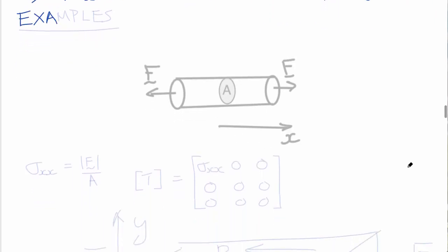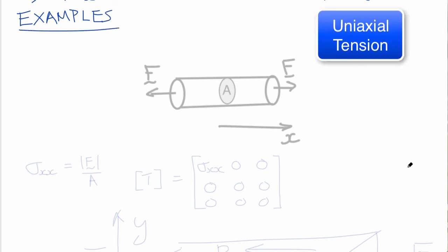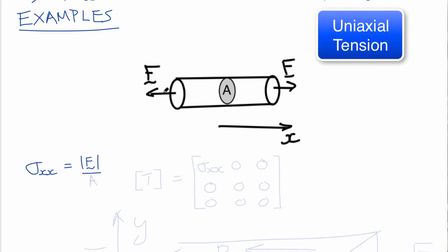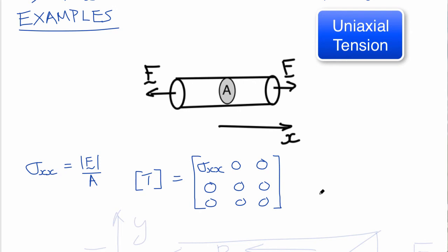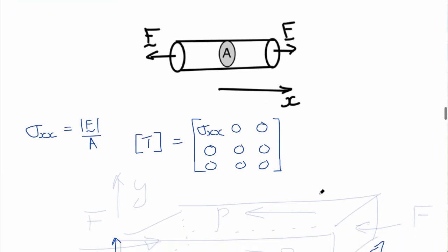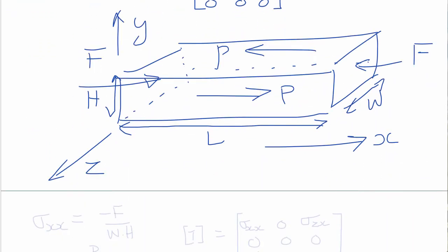We'll finish with a couple of simple examples. The simplest stress field is a uniaxial tensile stress field: imagine a uniform cylinder with cross-sectional area A and forces acting outwards at the ends, F in the x-direction. Then sigma_xx equals the magnitude of F divided by A, and the stress tensor T has sigma_xx as the only non-zero component, with zeros elsewhere. It's positive because it's an outward tensile stress.